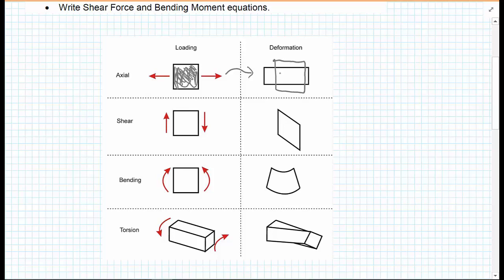Due to something called Poisson's ratio, which we'll discuss in strength of materials, the material will also have got thinner as a result. That's true for most materials, but not all.